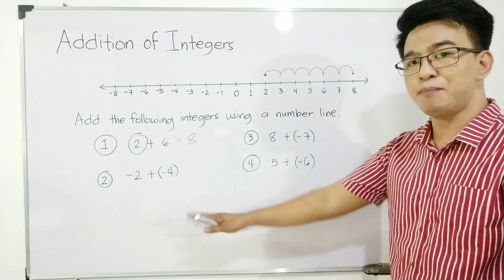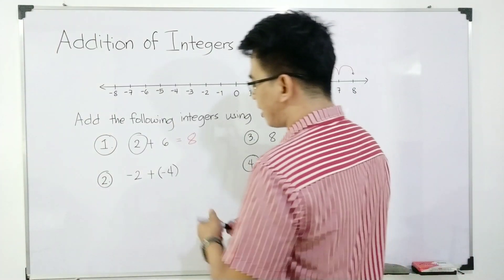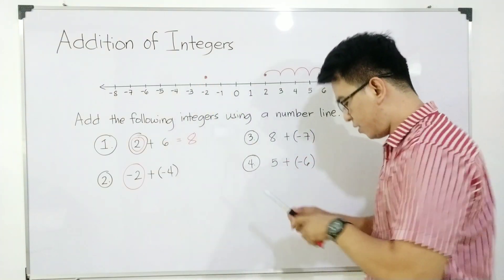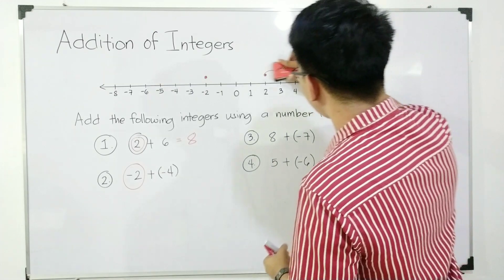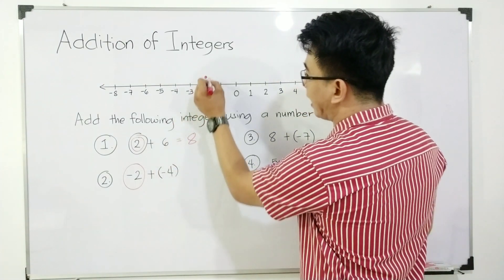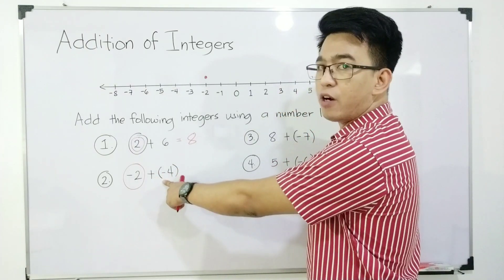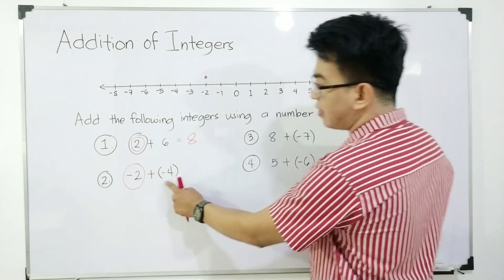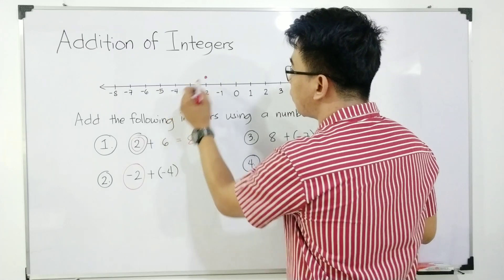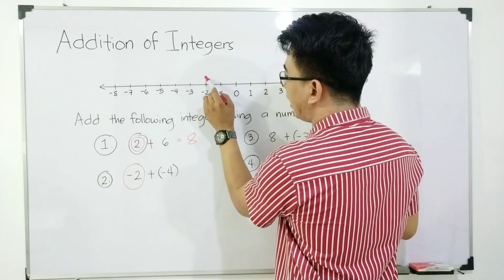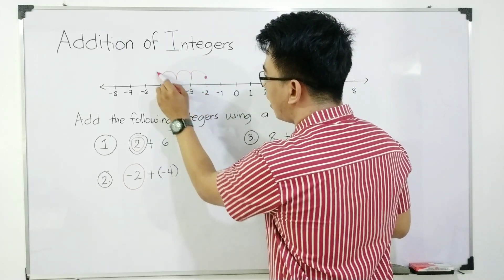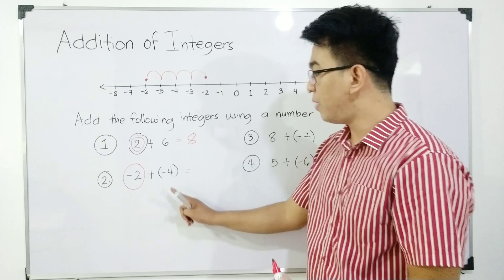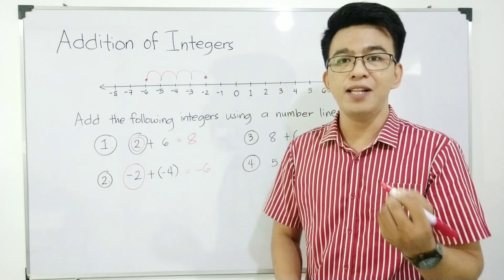Now let's move on with item number 2. We will start at negative 2 — negative 2 is our starting point. We have negative 2 plus negative 4, so we will add negative 4. Anong direction? Is it going to the right or going to the left? Since the sign of this is negative, we will move 4 units going to the left. So from negative 2: 1, 2, 3, and 4. This is our end point. The correct answer when you add negative 2 plus negative 4 is simply negative 6.